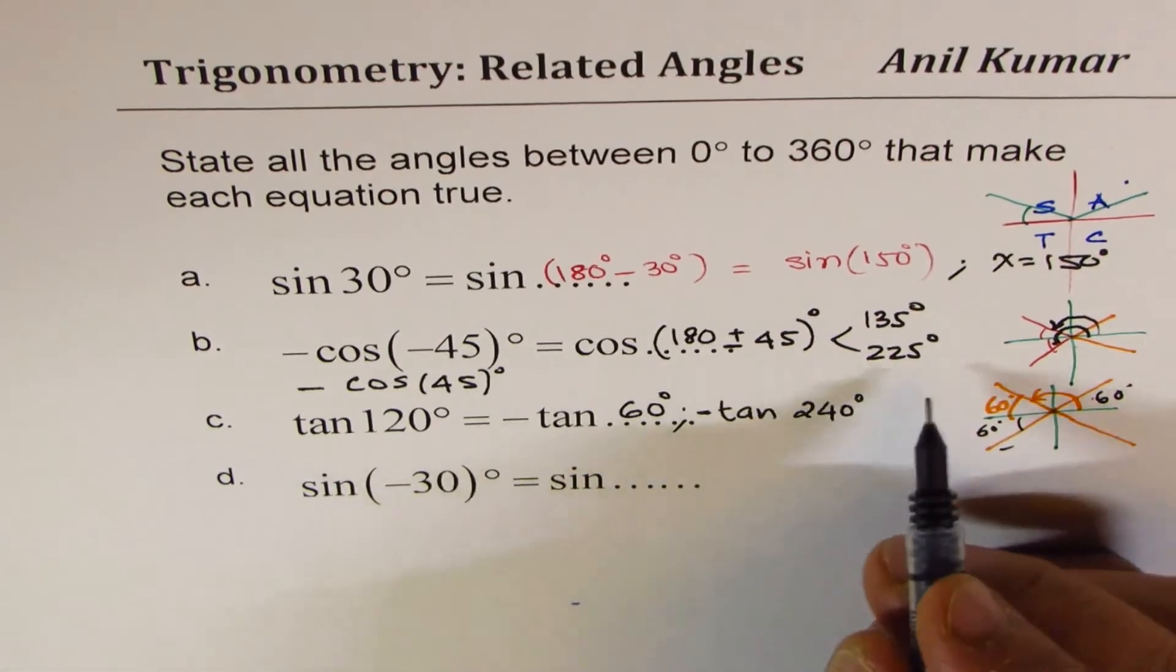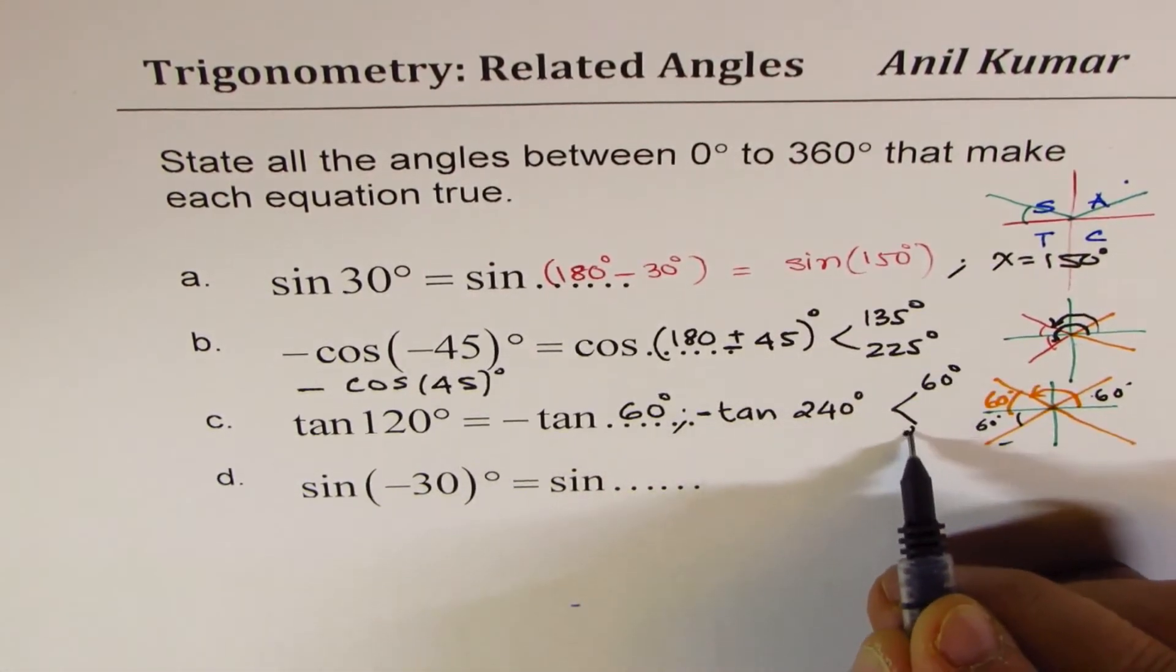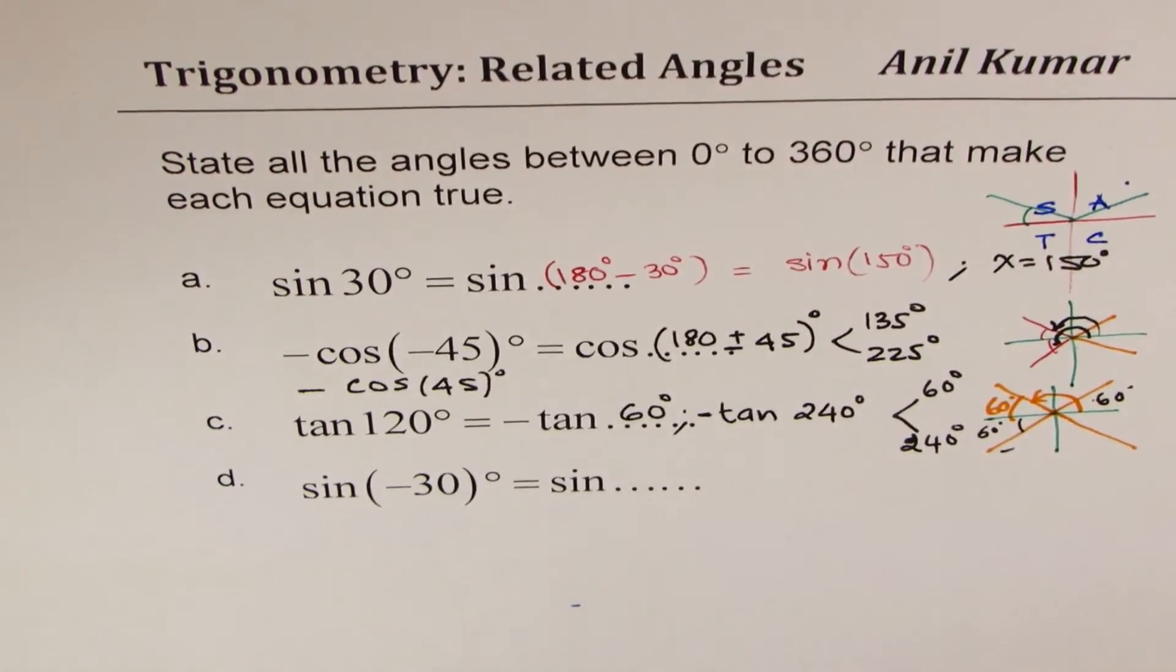So for part C, the angles will be 60 degrees and 240 degrees. Now here is the last question.